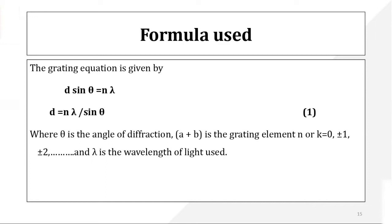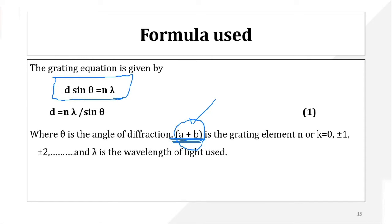The grating equation we use is: d sinθ = nλ. Here 'd' is (a + b), where 'a' is the slit width and 'b' is the distance between two slits. 'θ' is the diffraction angle — the angle at which light is bending. 'n' is the order of maxima: for first order put n = 1, for second order put n = 2.